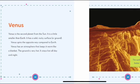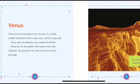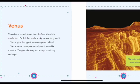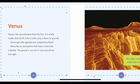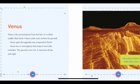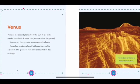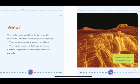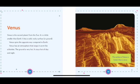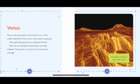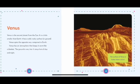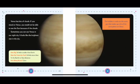Venus. Venus is the second planet from the sun. It is a little smaller than Earth. It has a solid rocky surface or ground. Venus spins the opposite way compared to Earth. Venus has an atmosphere that keeps it warm like a blanket. The ground is very hot. It stays hot all day and night. Venus has lots of clouds. If you stood on Venus, you would not be able to see the sun because of the clouds.